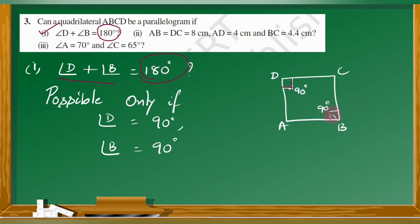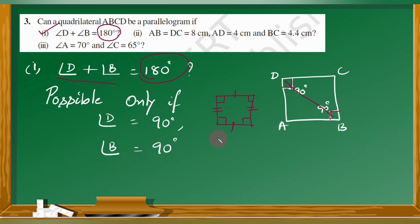If angle D plus angle B equals 180 degrees, and angle D is 90 degrees and angle B is also 90 degrees, then yes, this is also a parallelogram, because opposite sides are parallel to each other. So when both angles are 90 degrees, the quadrilateral can be a parallelogram. Angle D equals 90 degrees, angle B equals 90 degrees — this condition is possible.